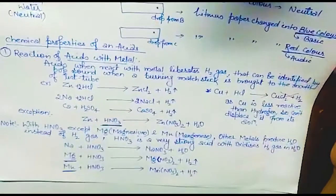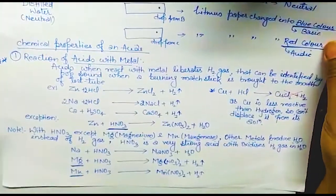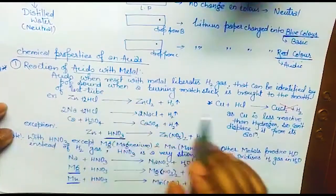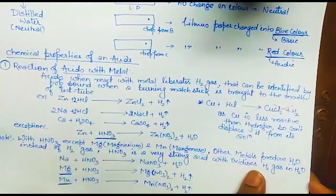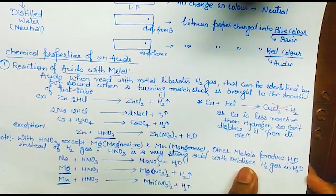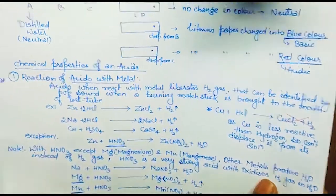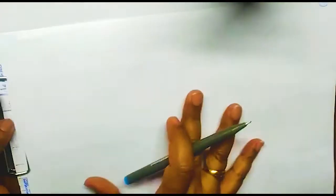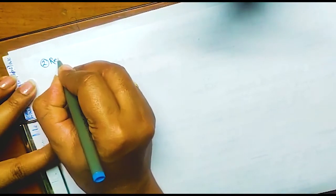We have done the reaction of chemical properties of an acid. After the first property — reaction of acid with metal — we are now going to start the second property, which is reaction with metal carbonate.